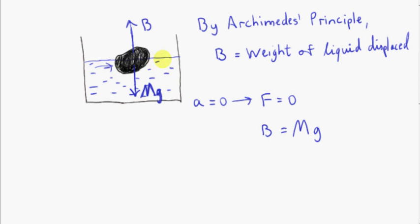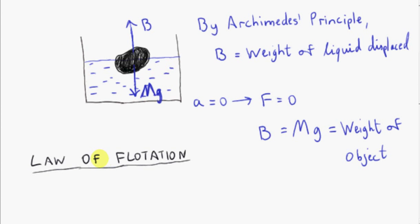Now, the horizontal force is automatically cancelled to zero because we're assuming that the object is not moving in the horizontal direction. So we can forget about them. So now we can write down the law of flotation, which is really just a corollary of Archimedes' principle. It's just applying Archimedes' principle to a floating object. So we see that B is equal to the weight of the liquid displaced and B is also equal to the weight of the object. So that means that for a floating object, the weight of liquid displaced is equal to the weight of the object.